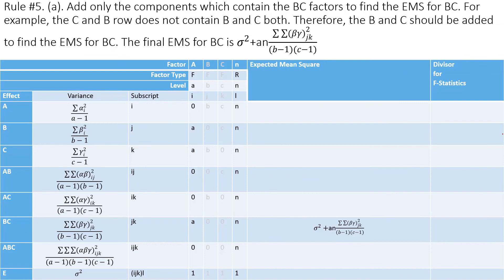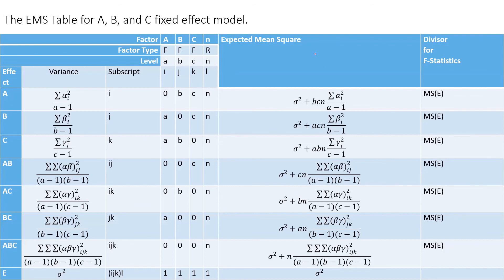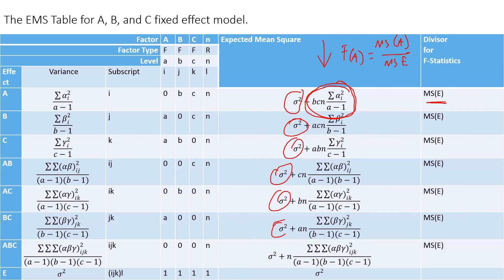Using this method you can find the entire expected mean square table. To find the correct F statistic — say for the effect of A — you look at its EMS, which is associated only with the experimental error sigma-squared, so the F statistic for A is MS_A divided by MS_E. Since all factors are fixed, every F statistic divisor is simply the experimental error. In the next videos I'll discuss random models, mixed models, and nested random designs.